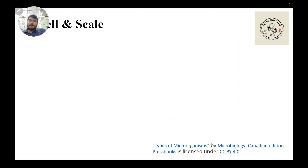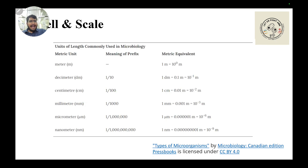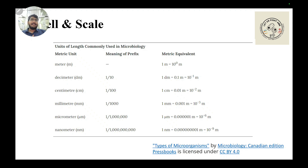To give you an idea of what we are talking about, have a look at this table. We are talking about sizes that do not range in meters, decimeters, centimeters, or even millimeters. We are talking about size ranges in micrometers — 10 raised to minus 6 meters — or nanometers — 10 raised to minus 9 meters. So you can imagine how minute these organisms are.